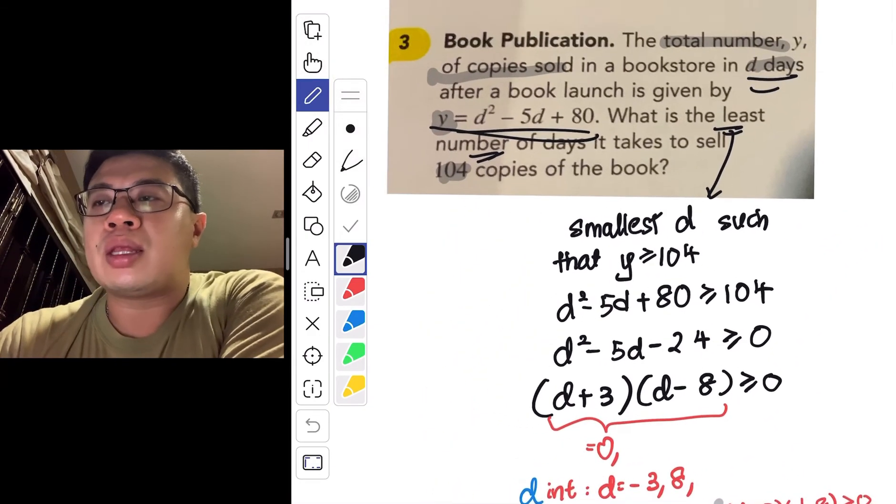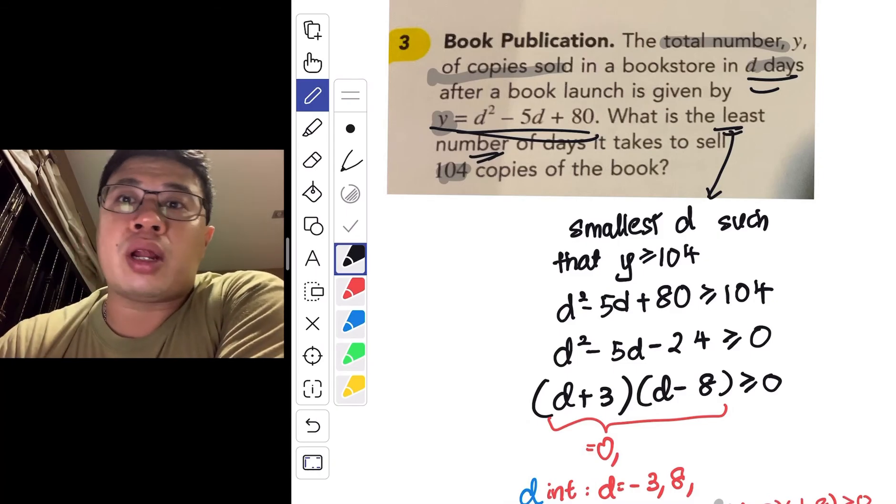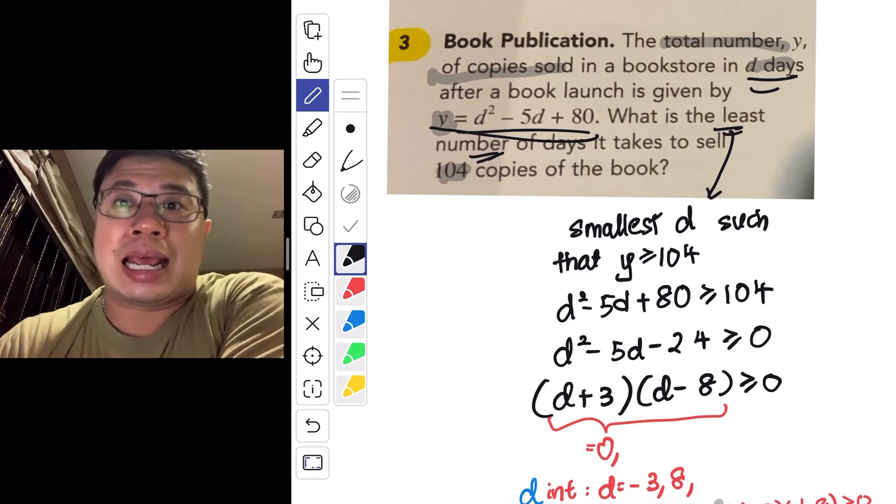Now, what does d represent here? d talks about the number of days. And what does it mean? Your d cannot be negative.